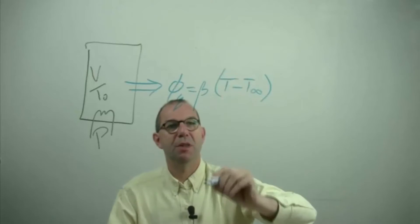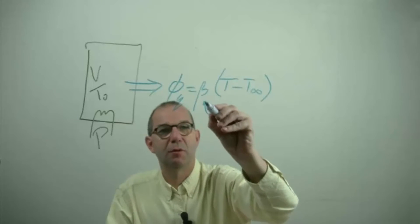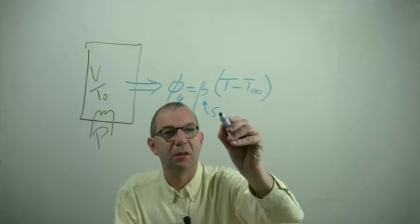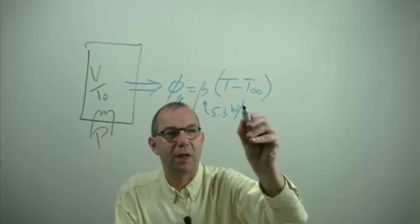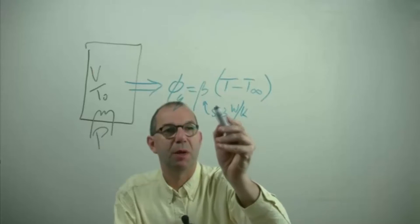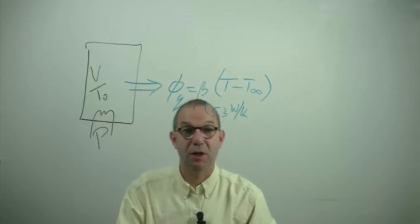We're going to put a coefficient beta in front of this which has a numerical value of 5.3 watts per Kelvin. So if this is 20 degrees temperature difference multiply that by 5.3 and you have the heat flow in joules per second flowing out.